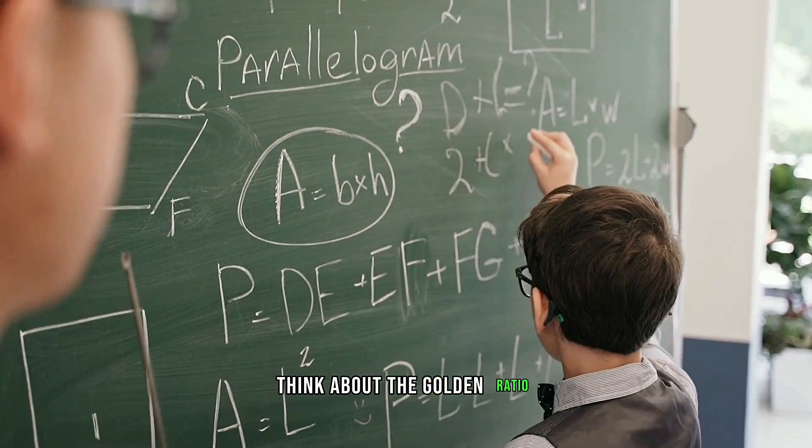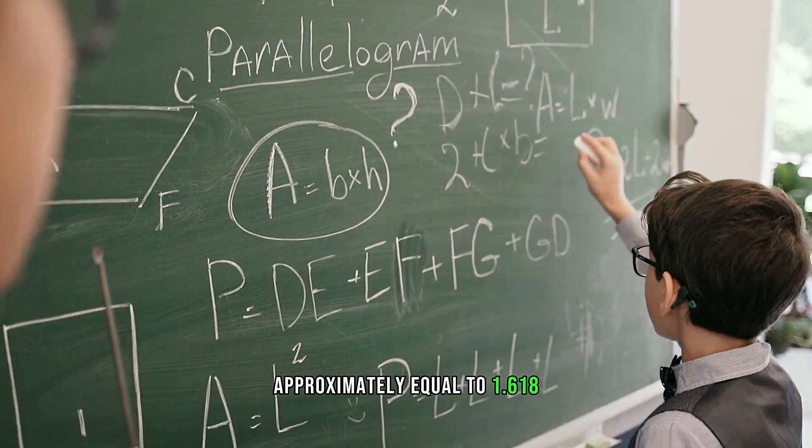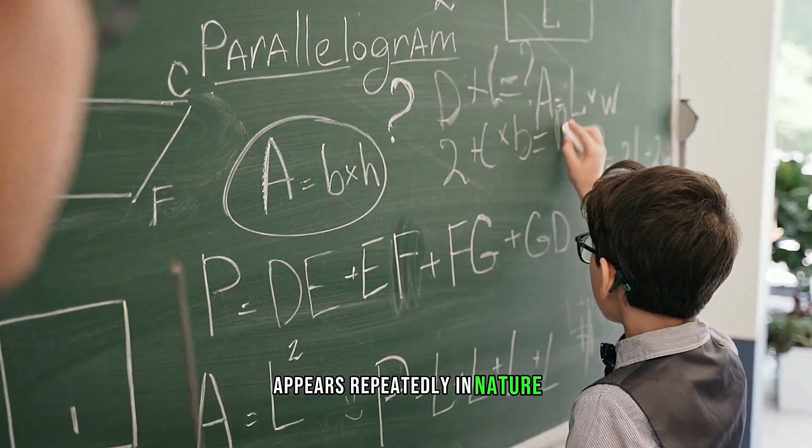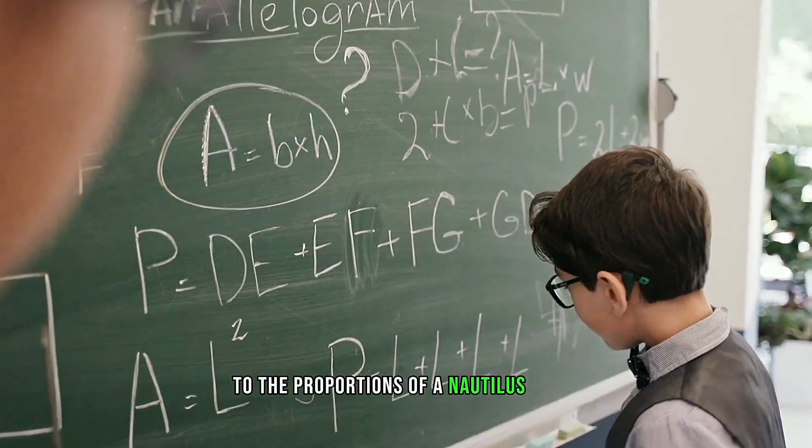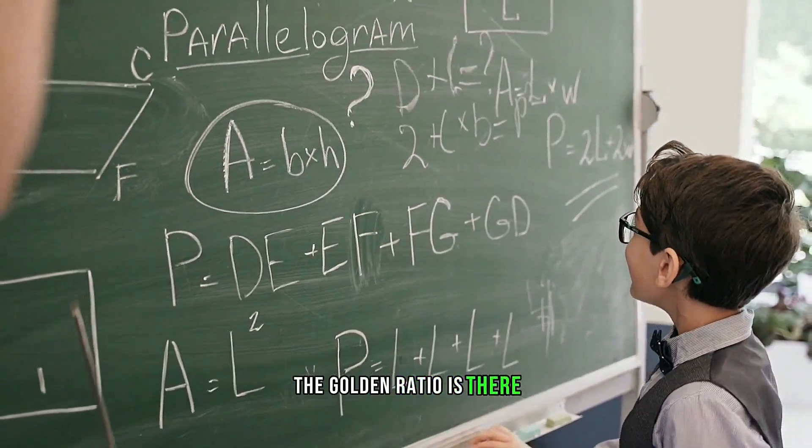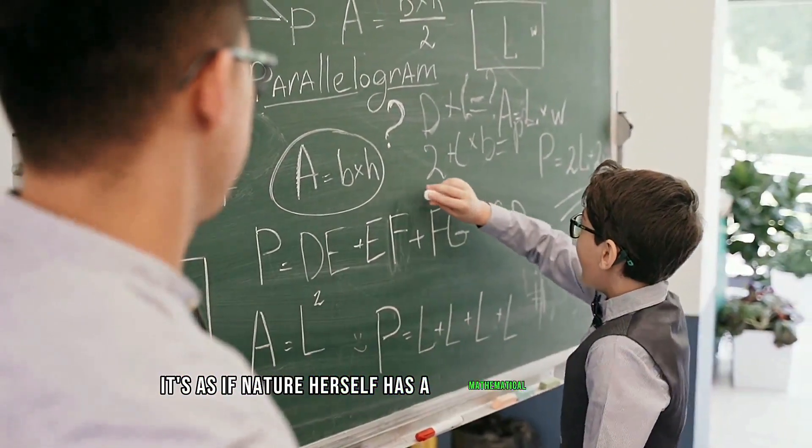To illustrate this, think about the golden ratio. This mathematical constant, approximately equal to 1.618, appears repeatedly in nature. From the spirals of sunflower seeds to the proportions of a nautilus shell, the golden ratio is there, independent of human influence. It's as if nature herself has a mathematical blueprint.